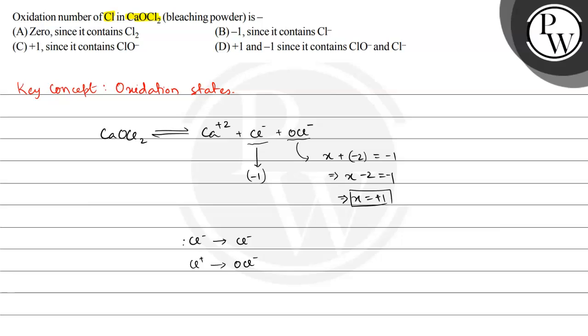So there are two oxidation states present, one is -1 and one is +1. The correct answer is option D that says the oxidation number of Cl is +1 and -1 since it contains ClO- and Cl-. This is the required solution and I hope you understood the concept well. Best of luck.